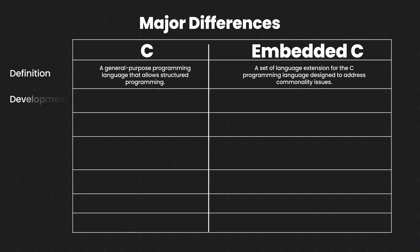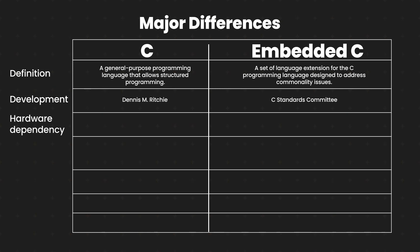Now, if we talk about development: the C programming language was developed by Dennis M. Ritchie, whereas the embedded C was developed by the C standards committee. The next difference we have is hardware dependency, which is a major difference between C and the embedded C programming language.